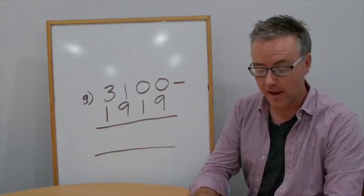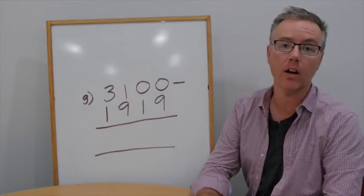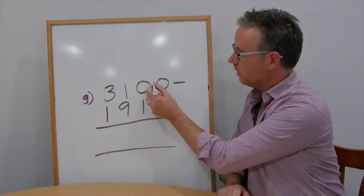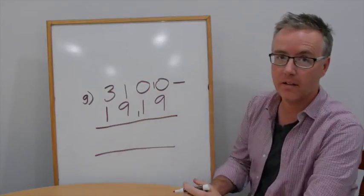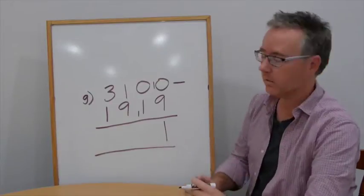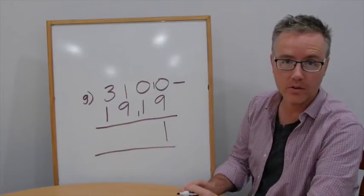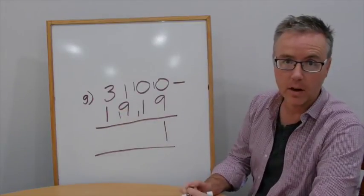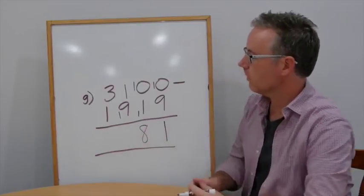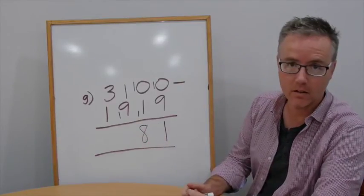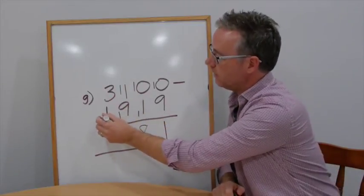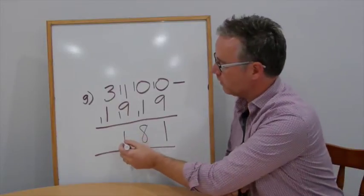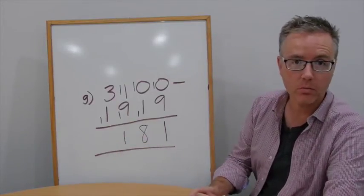Question G: 3,100 take away 1,919. 0 take away 9, can't do. Add 10, add 10. 10 take away 9 is 1. 0 take away 2, can't do. Add 10, add 10. 10 take away 10 is 8. 1 take away 10, can't do. Add 10, add 10. 11 take away 10 is 1. 3 take away 2 is 1. Answer: 1,181.